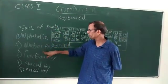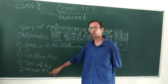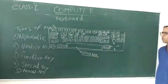Types of keys are the alphabetical key, number key, function key, special key, and arrow key. There are five types of keys on the keyboard.